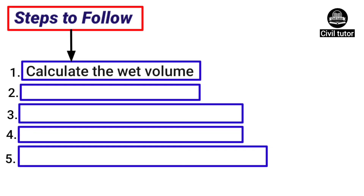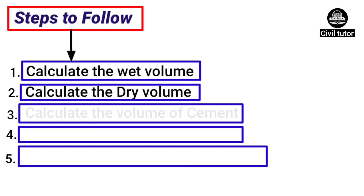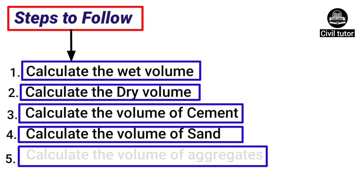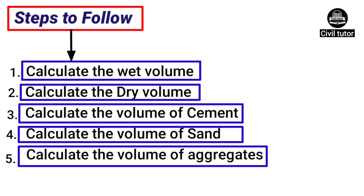The first step is to calculate the wet volume of the member. The second step is to calculate the dry volume. In the third step, we need to calculate the volume of cement and number of cement bags required. The fourth step will be to calculate the volume of sand, and finally, the volume of aggregates will be calculated in the fifth step.